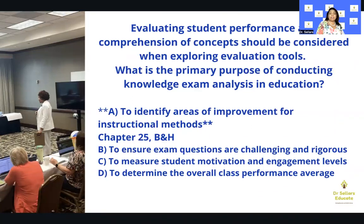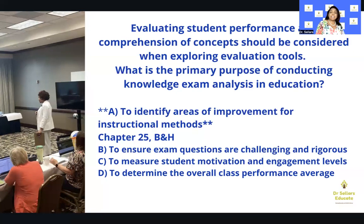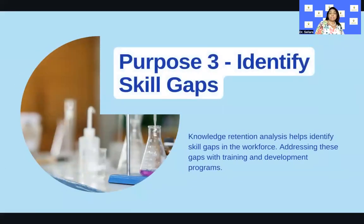If you chose A, to identify areas of improvement for instructional methods, you are correct. Take a look at chapter 25 in Billings and Halstead. If this is a gray area or a muddy point for you, having Billings and Halstead as a primary resource is going to help you expand your knowledge and validate comprehension of concepts so that when the questions show up on the C&E exam, you are ready and confident in your ability to choose the best option.